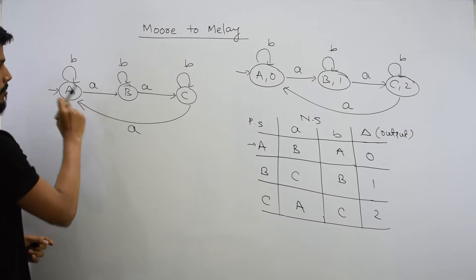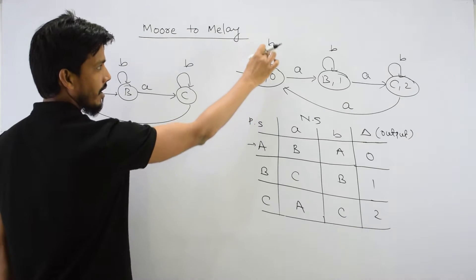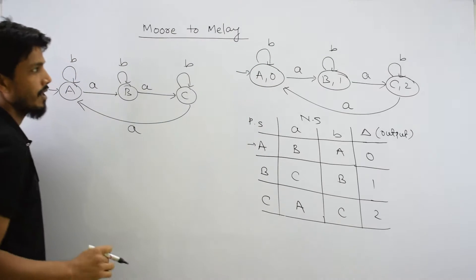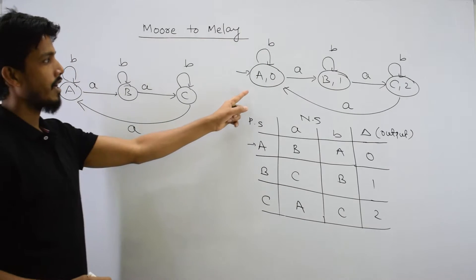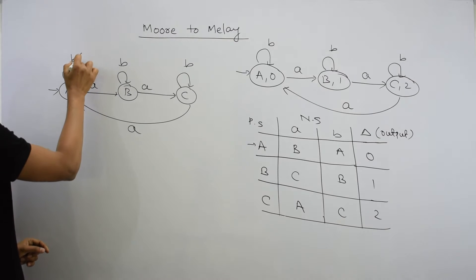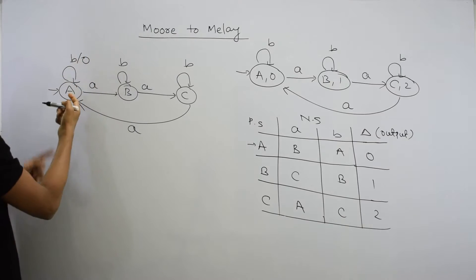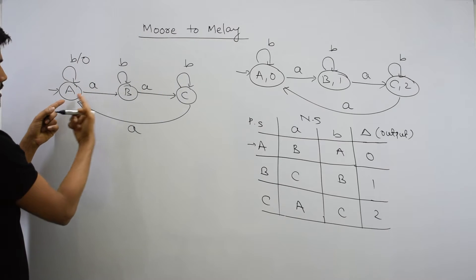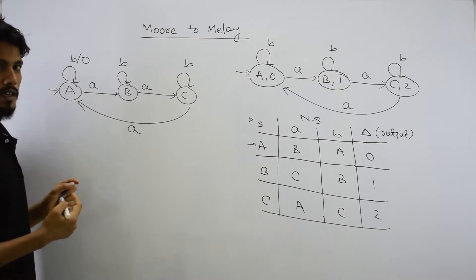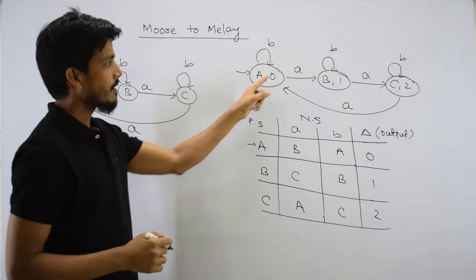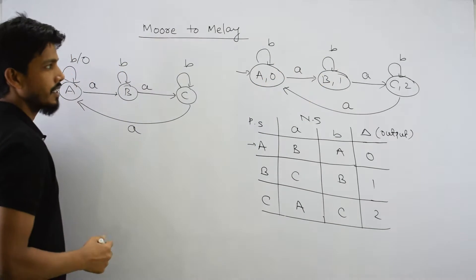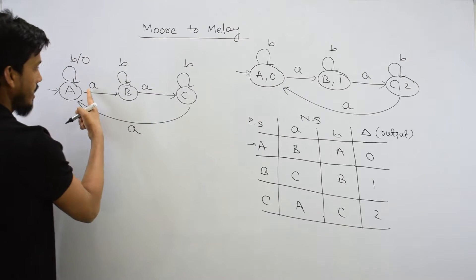Let's look at the output at state A. From state A, the transition goes to state B by input A. Capital A's output is 0. So the transition from A to B via input A will carry output 0, which is the associated output of state A, now placed on the transition.